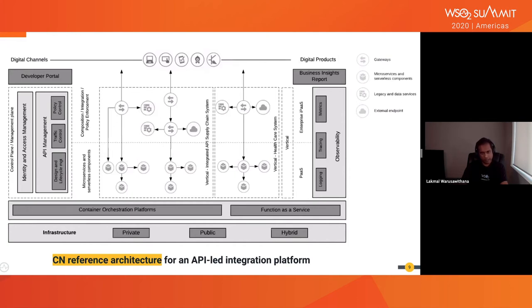This is a reference architecture for a cloud native API-led integration platform. The infrastructure and orchestration layers represent the same functionality discussed in the cloud native reference architecture. Cloud Foundry, Mesos, Nomad, Kubernetes, Istio, and Linkerd are some examples of current industry-leading container orchestration platforms. Knative, AWS Lambda, Azure Functions, Google Functions, and Oracle Functions are a few examples of function-as-a-service platforms.